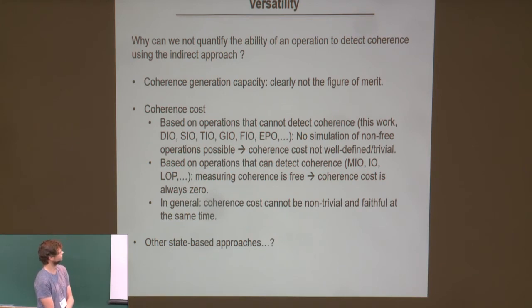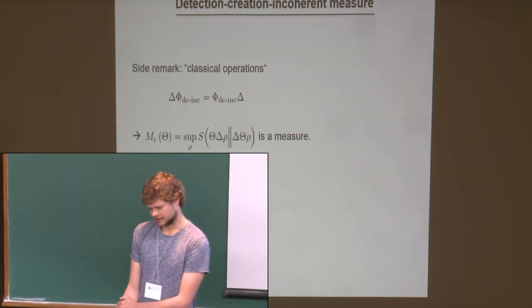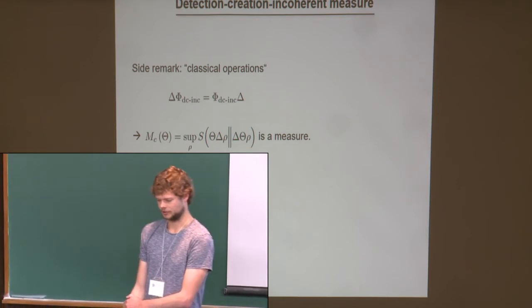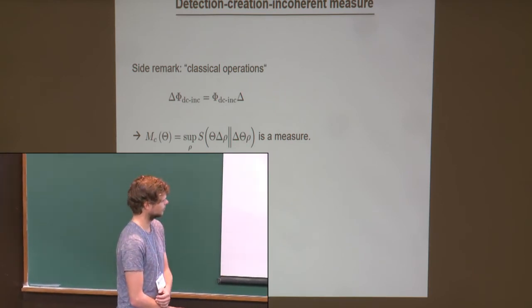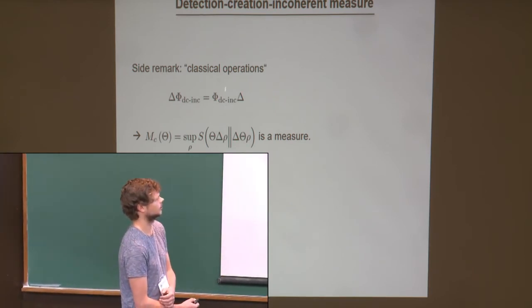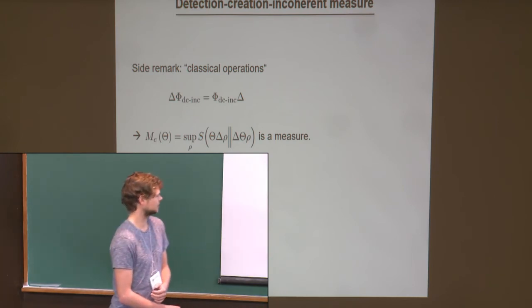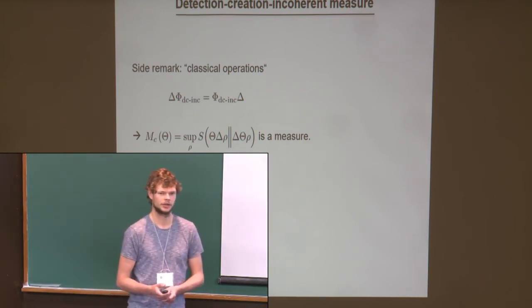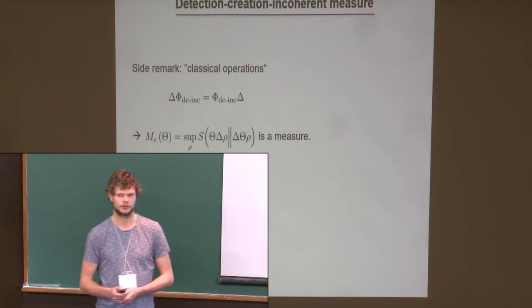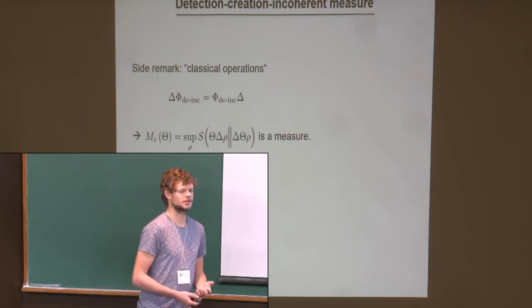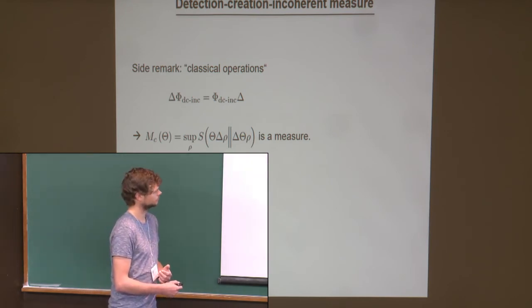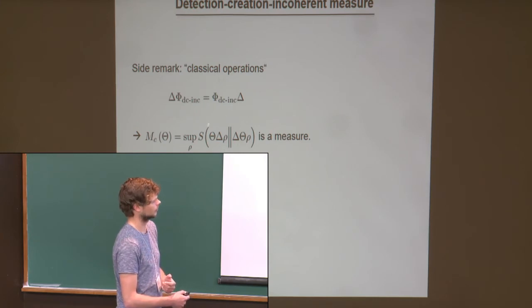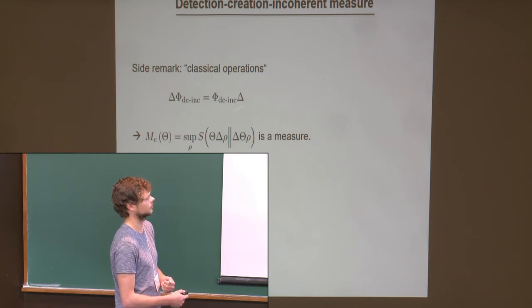As a side remark, I will mention detection-creation incoherent operations. They were considered in 2003 under the name 'classical operations' in a paper titled 'Quantifying the non-classicality of operations.' That paper does not use a resource theory but comes up with some well-motivated measures, in particular one based on the quantum relative entropy. One can show that this measure is indeed also a valid measure in the present setting.